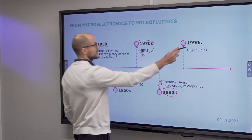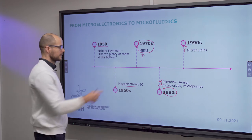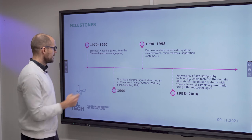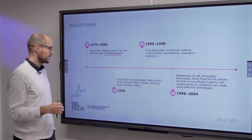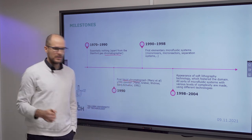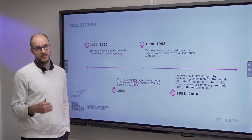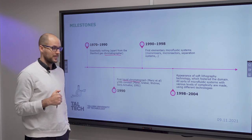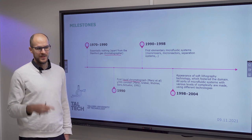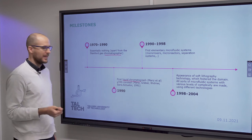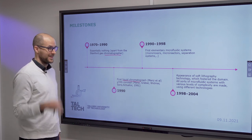In the 90s, microfluidics truly formed as a discipline. But it all started with chromatography — initially gas chromatography. Microfluidics really grew out of MEMS and liquid chromatography, and you can track this by looking at the equipment used in labs. We use Teflon tubes, threaded fittings, and so on — the same equipment used in high-performance liquid chromatography, which you can order from chromatography catalogs.